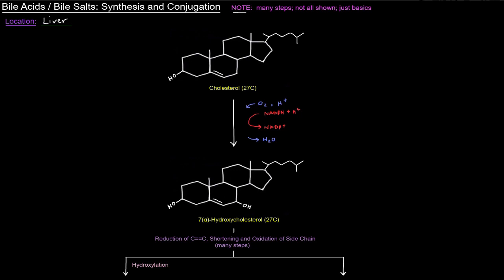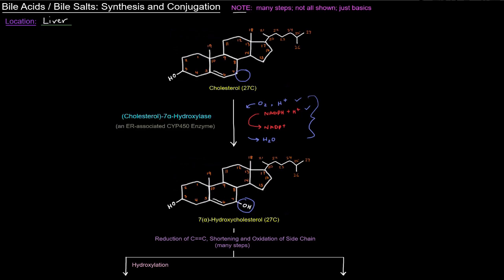The first step in producing bile acids is to convert cholesterol into 7-alpha hydroxycholesterol. The difference between these two molecules is simply that a hydroxyl group is added at the seven position. In order to do that we need oxygen and NADPH to get this reaction to go. These reagents are characteristic of a mixed function oxidase.